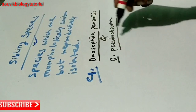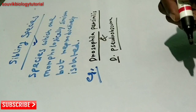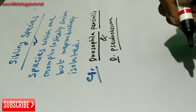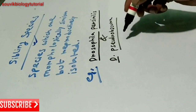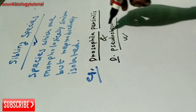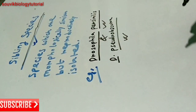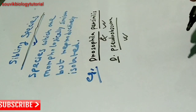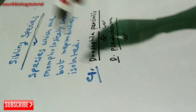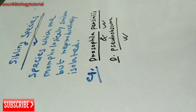These two species are structurally similar but reproductively isolated, so they are an example of sibling species. To repeat: species which are morphologically similar but reproductively isolated are known as sibling species.